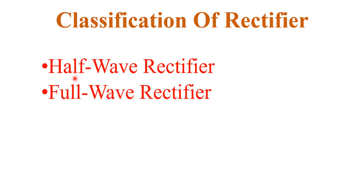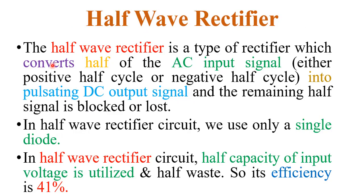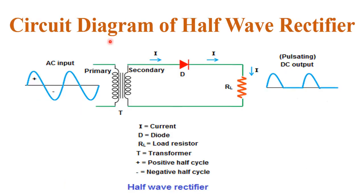Now, the classification of rectifiers. Rectifiers are basically of two types: half wave rectifier and full wave rectifier. In this lecture, I will explain only the half wave rectifier. A half wave rectifier is a type of rectifier which converts only half of the AC input signal into pulsating DC output signal, and the remaining half signal is blocked or lost. The half wave rectifier uses only a single diode, and since only half the input voltage is utilized, its efficiency is only 41%.